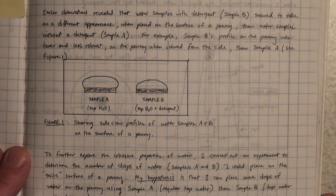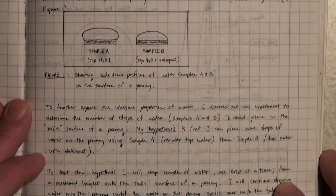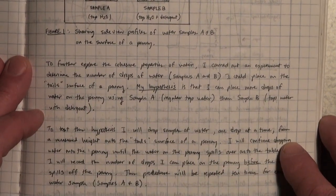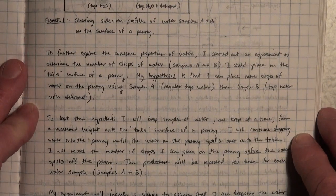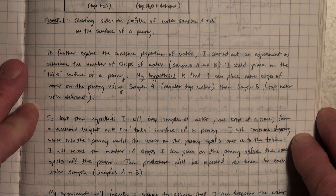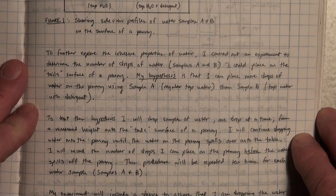To further explore the cohesive properties of water, I carried out an experiment to determine the number of drops of water I could place on the tail surface of a penny. My hypothesis was that I could place more drops of water on the penny using sample A, or regular tap water, than I could sample B, or tap water with detergent.